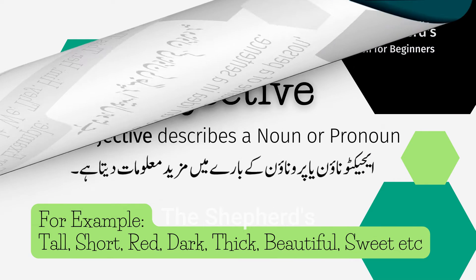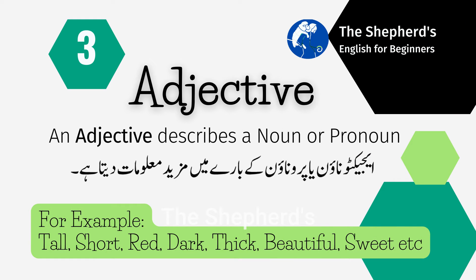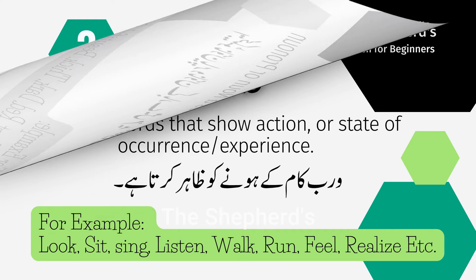Number 3. Adjective. An adjective describes more about a noun or pronoun. For example: tall, short, dark, red, thick, beautiful, sweet, etc.